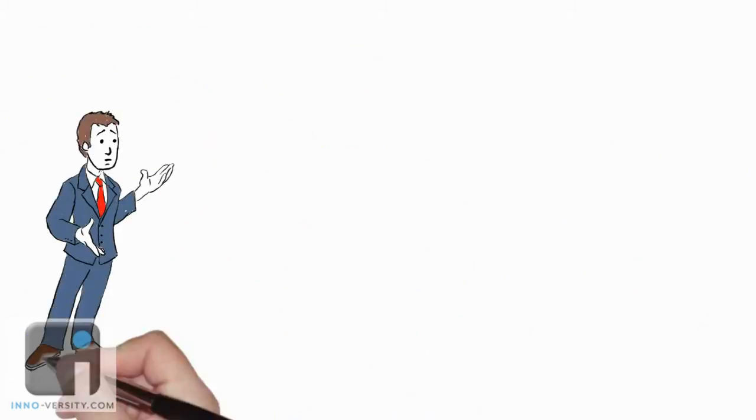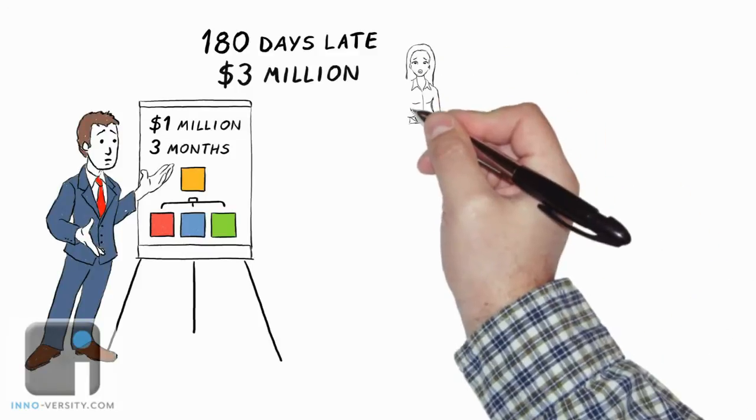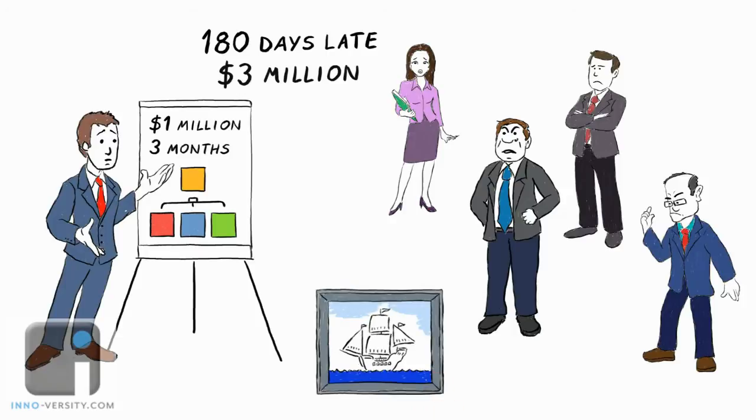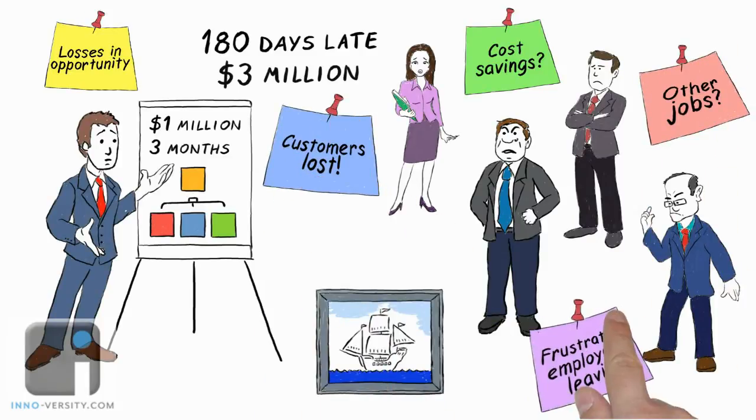Now think about it. Apply this to a larger project that's budgeted at one million dollars over three months. With Steve's project management skills, the project would come in one hundred eighty days late, with a final cost of almost three million dollars. The frustration level of his boss and team members likely can't be measured, although his boss will certainly try during his annual evaluation. And who knows how many days off he missed, time with his family, trying to right the ship. This kind of added expense and time means there were huge losses and opportunities, things like cost savings and other people's jobs, customers lost, and frustrated employees leaving.